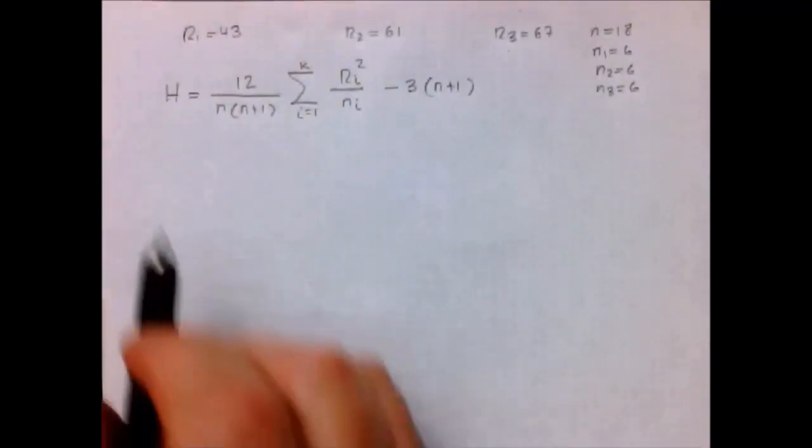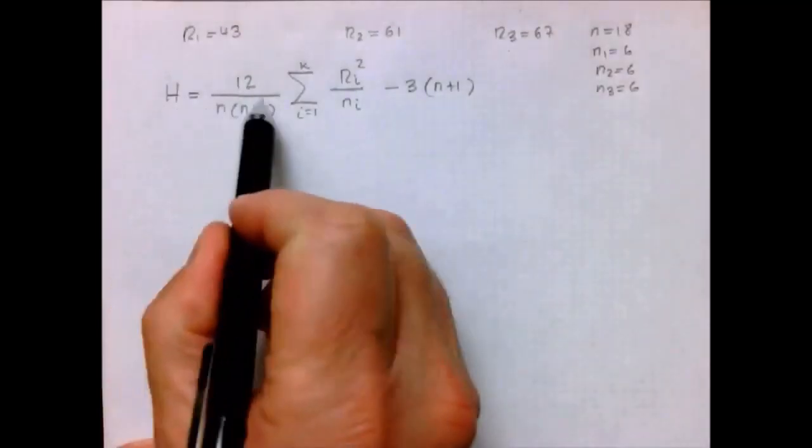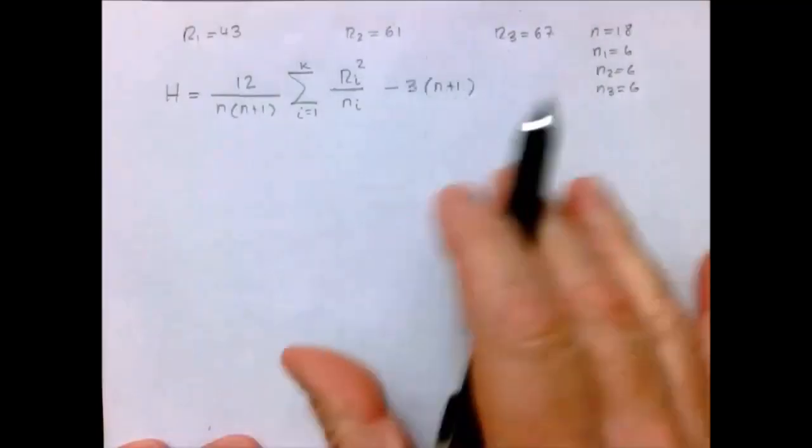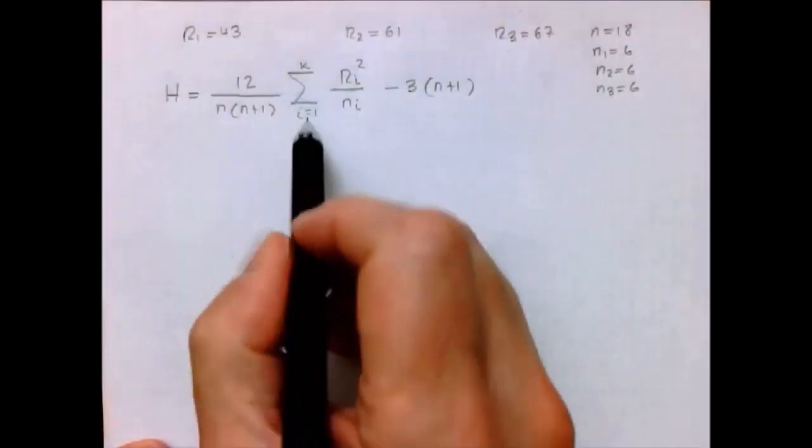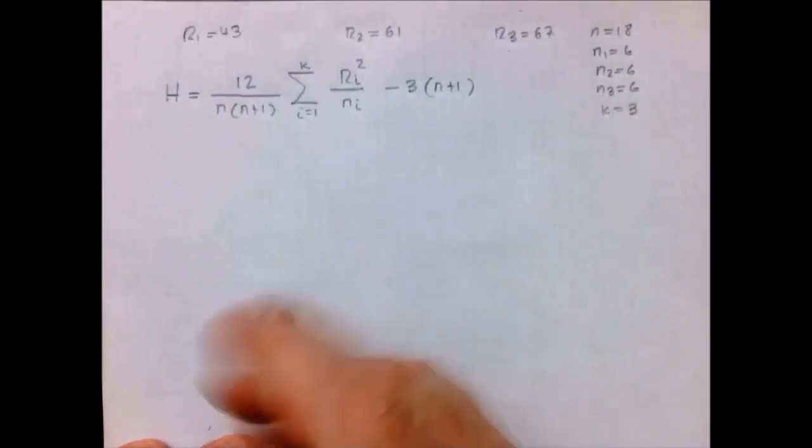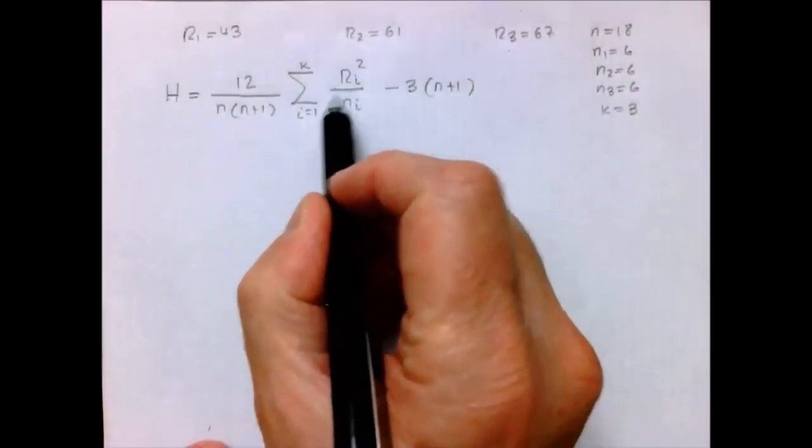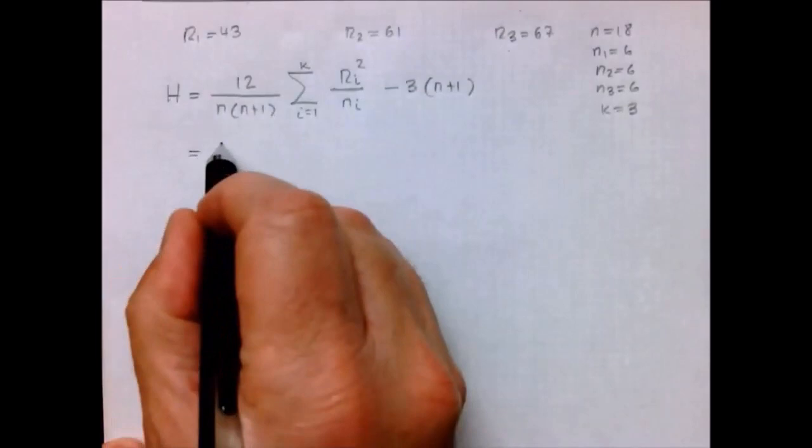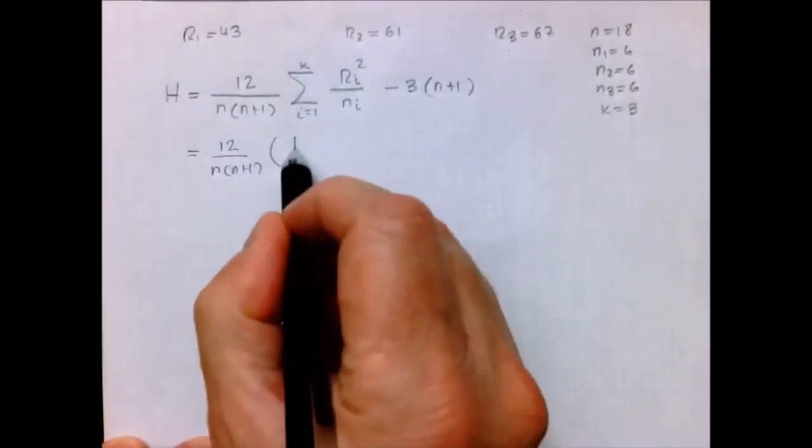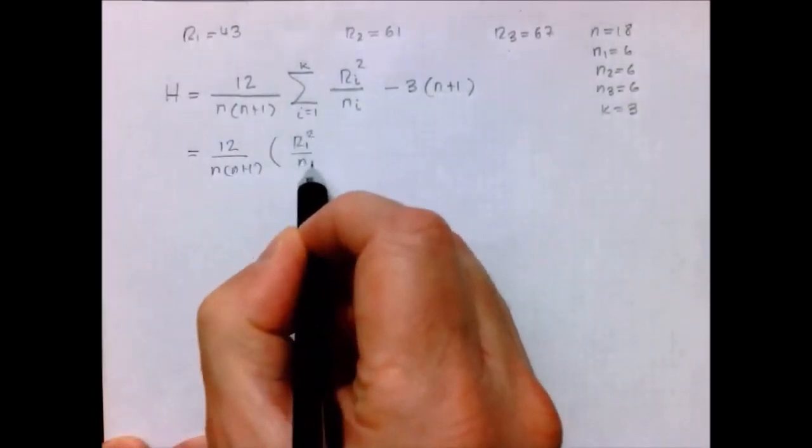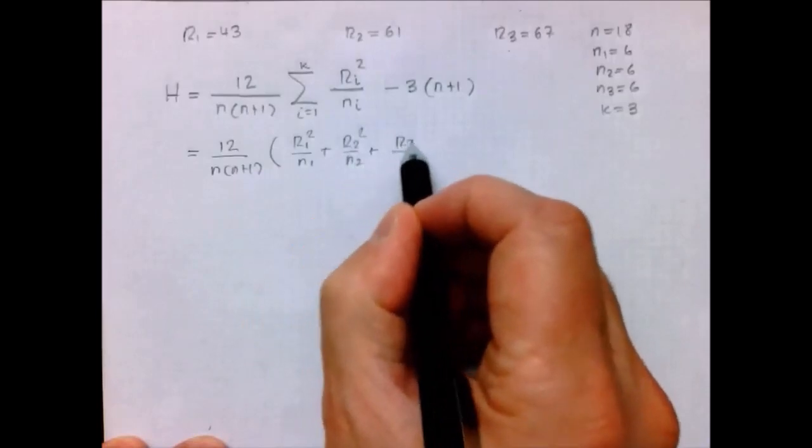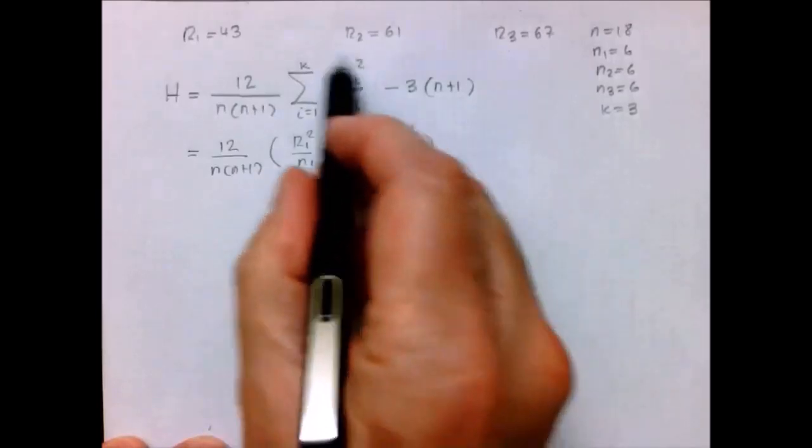And our test statistic is H, which is equal to 12 divided by N times N plus 1. N is the total number of observations in the combined sample. Times the sum for i equals 1 to k. The k in our problem is 3, which is the number of populations, the number of samples. And what this means is R1 squared over N1 plus R2 squared over N2 plus R3 squared over N3. That's what this formula means.